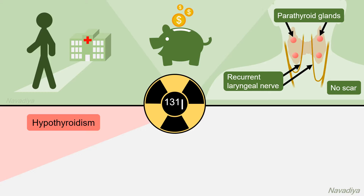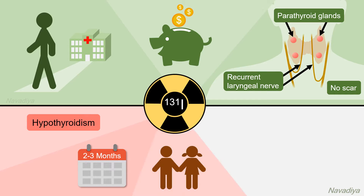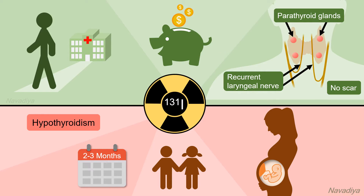Coming to the cons: there is a risk of hypothyroidism as a side effect. It takes 2 to 3 months till hyperthyroidism is completely controlled. It is not suitable for children, as they are more likely to develop hypothyroidism later in life. It should also be avoided in pregnant women because it may destroy fetal thyroid tissue.